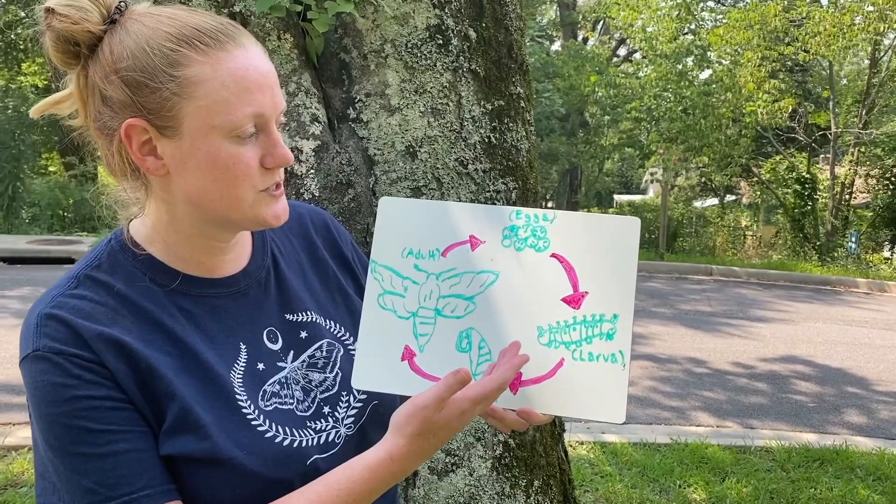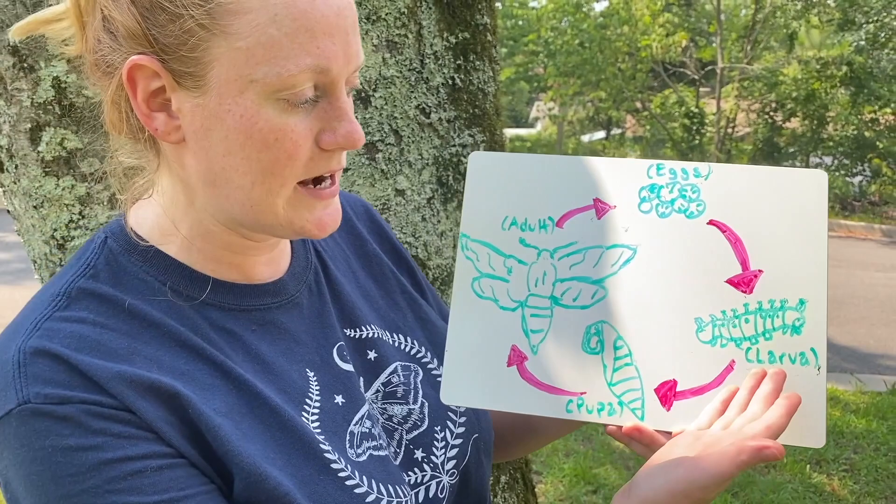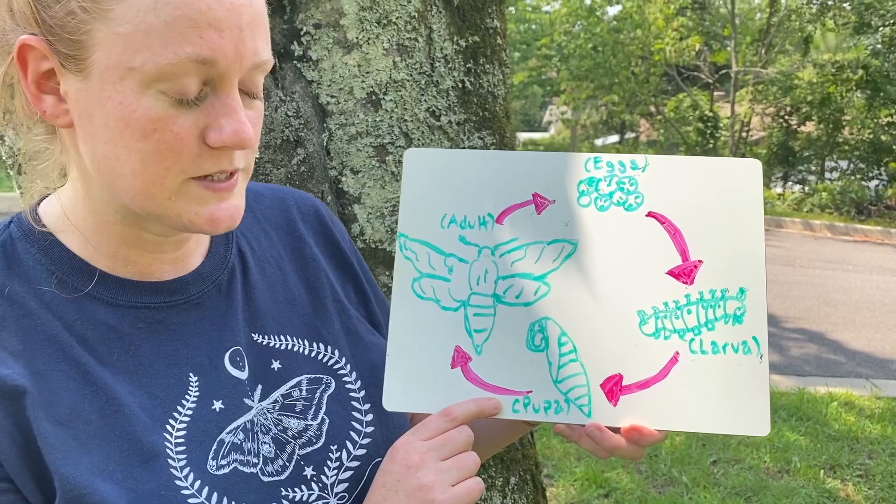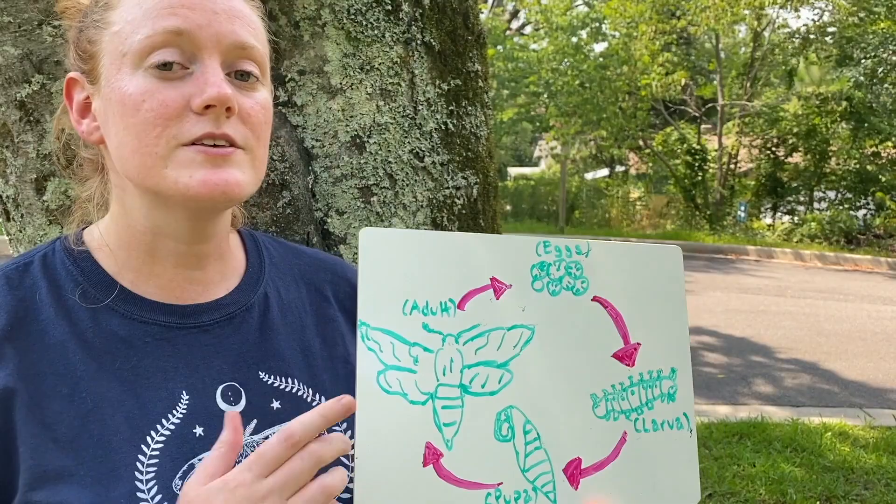So moths and butterflies undergo complete metamorphosis. That means their life cycle includes the egg stage, then they go into their larva stage which is when they're a caterpillar. They're very active during that stage, then they go into an inactive pupa stage, and lastly they emerge as their adult moth form.